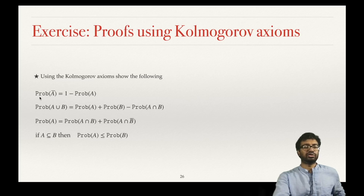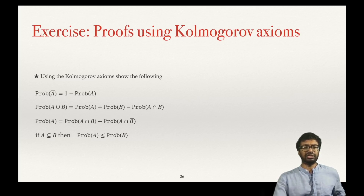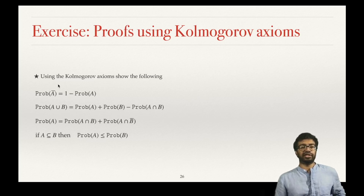The exercises are: show that the probability of A complement equals 1 minus probability of A; show that probability of A union B equals probability of A plus probability of B minus probability of A intersection B, where A and B need not be disjoint; show that probability of A equals probability of A intersection B plus probability of A intersection B complement; and show that if A is a subset of B, then probability of A is less than or equal to probability of B. Try to prove these using Kolmogorov's axioms.